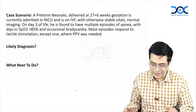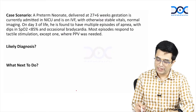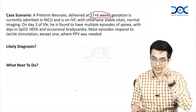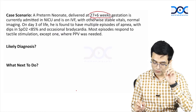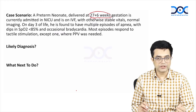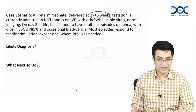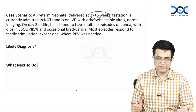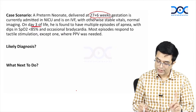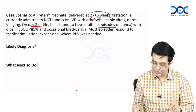Let us start with the case scenario. The question says there is a preterm newborn delivered at 27 plus 6 weeks — so less than 28 weeks. He is currently admitted in a newborn ICU and he is on IV fluids with otherwise stable vitals, normal imaging whenever it was done. On day 3 of life, so in the first week, he is found to have multiple episodes of apnea.